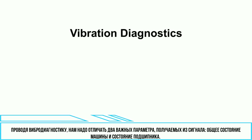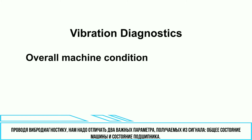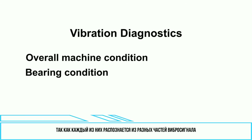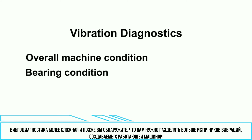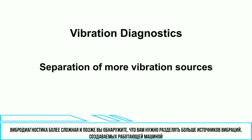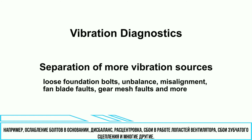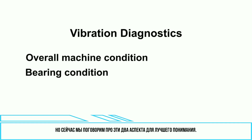While performing vibration diagnostics, we want to distinguish two important things which we get from the signal: overall machine condition and bearing condition, as each of them is diagnosed from different parts of the vibration signal. Vibration diagnostics is more sophisticated, of course, and later on you will find out that you need to separate more vibration sources generated by a running machine — for example, loose foundation bolts, unbalance, misalignment, fan blade faults, gear mesh faults, and many more. But for now, let's just talk about those two basic things for an easier explanation.